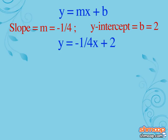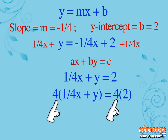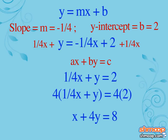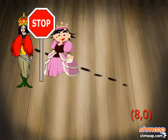We know that standard form is Ax plus By equals C. We can start by adding one-fourth x to both sides to get one-fourth x plus y equals two. To make the coefficient of x an integer and not a fraction, we multiply the equation by four and end up with x plus 4y equals 8. It looks like Princess Eudora will grab the prince first.